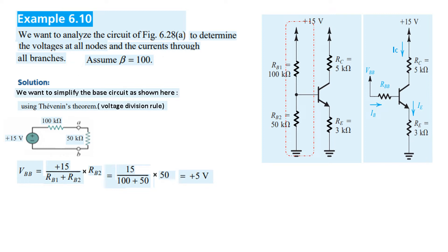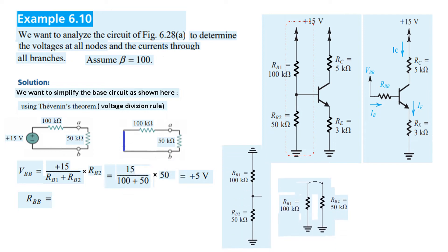The Thevenin voltage VBB is 5V. The voltage source is in parallel with the 50kΩ resistance. We then calculate RBB as RB1 parallel RB2, which is 100k parallel 50k, giving RBB equal to 33.3kΩ.